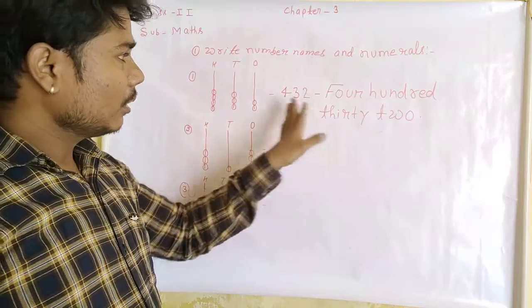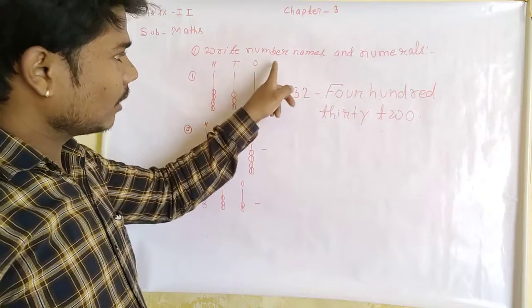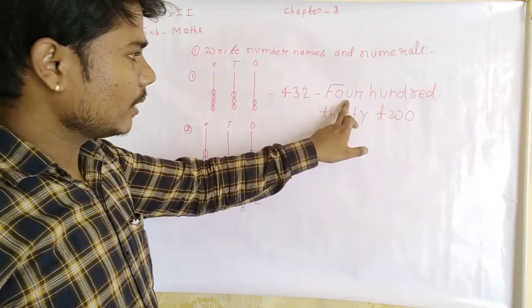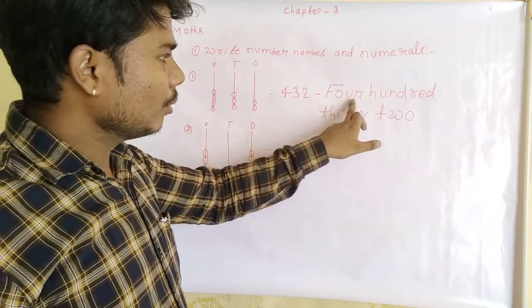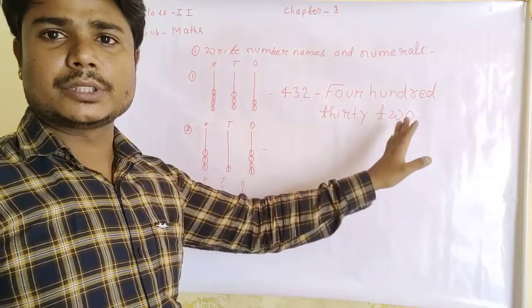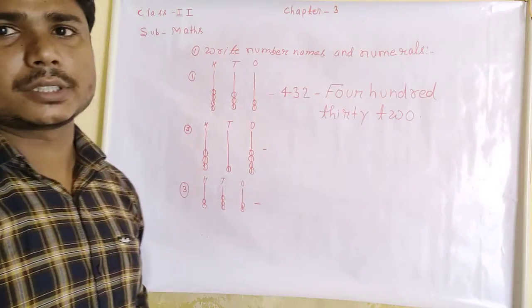Now we have to write number names also. So we have written 432. This is your first answer.